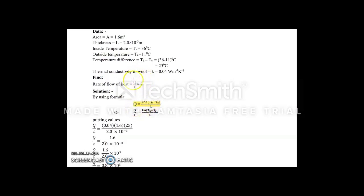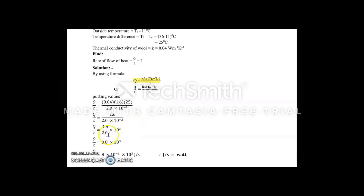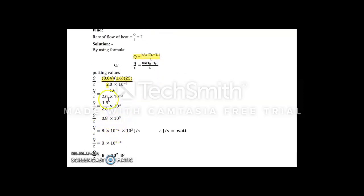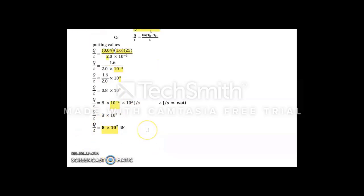Now putting the values: first we have K value, then we have area, now the temperature difference, and here we have L value. We will multiply all of them. We got the answer 1.6, then we have length. This value is in denominator, so we have power positive. Dividing the values, we get 0.8 multiplied by 10 to the power 3. We take the point to the left, so we have 8 and 10 to the power minus 1. This value is the same, so 3 minus 1 equals 8 multiplied by 10 to the power 2. When we talk about units, we have joules per second, and joule per second equals watt.